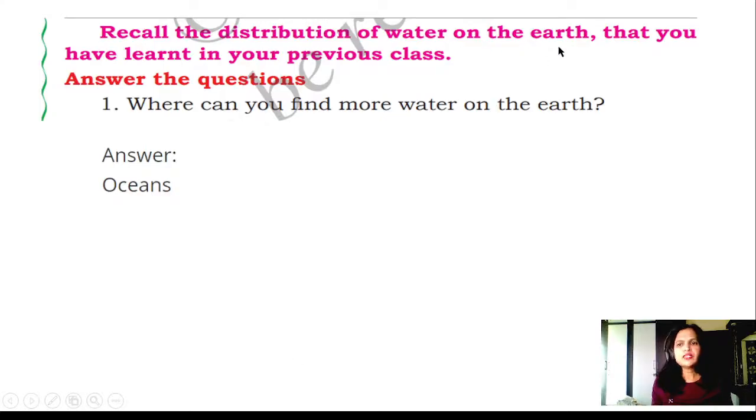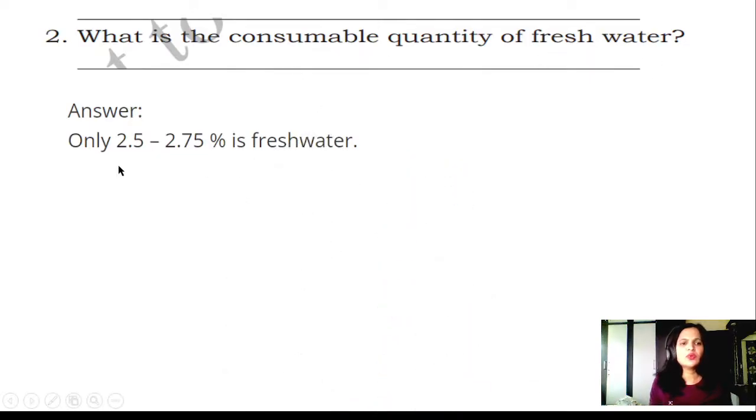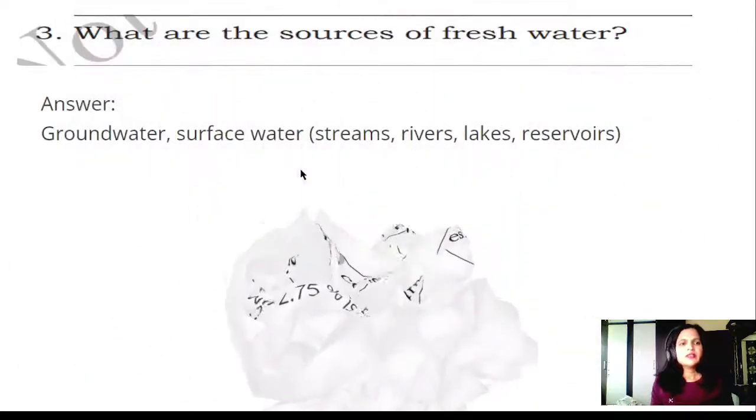Recall the distribution of water on the earth that you have learned in the previous class. Answer the questions: Where can you find more water on the earth? Answer: Oceans. Second question: What is the consumable quantity of fresh water? Answer: Only 2.5 to 2.75% is fresh water. Third one: What are the sources of fresh water? Answer: Ground water, surface water, streams, rivers, lakes, reservoirs.